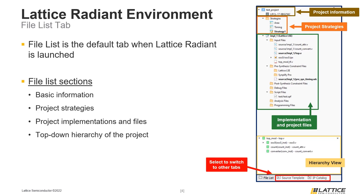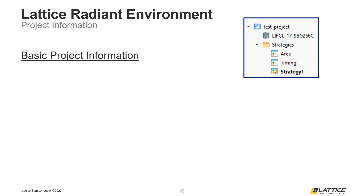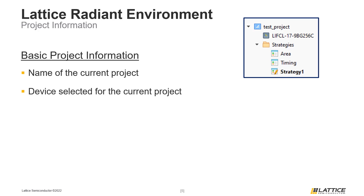The first section of the File List tab is Basic Information. This section contains some basic information about a Radiant project, like its name and the selected device. The project device is the hardware that users plan on programming their design to. The selected device for a project can be modified by double-clicking the name of the device.